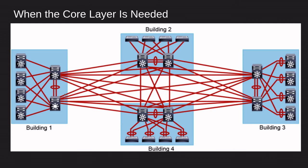When is the core layer actually needed? Without a core layer, the distribution layer switches would need to be fully meshed — all of them connected to each other. This design is really hard to scale due to the increase in cabling requirements, because each new building you add needs full mesh connectivity to all the distribution switches. If you add building five, it would have to be connected to buildings one, two, three, and four — and that's a lot of money spent running cables, probably fiber because they won't be close together.